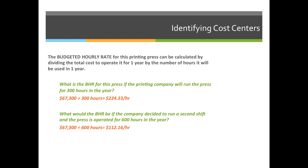What is the budgeted hourly rate if the printing company runs the press for 300 hours in a year? It costs $67,300 per year to have the press whether we print one job or zero jobs. Dividing $67,300 by 300 hours gives a budgeted hourly rate of $224.33. Now if we add a second shift and the press runs for 600 hours instead, we still divide $67,300 by 600 hours, which gives a budgeted hourly rate of $112.16.